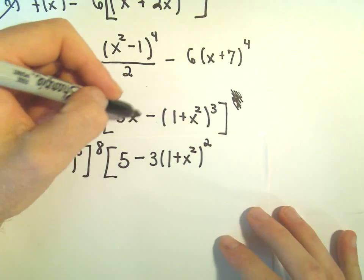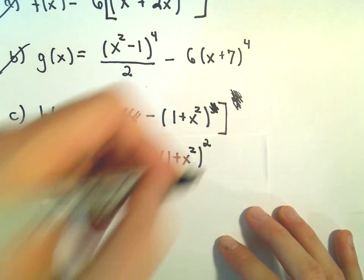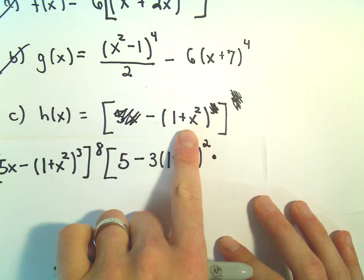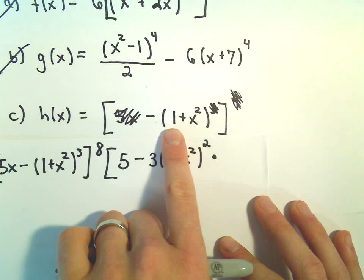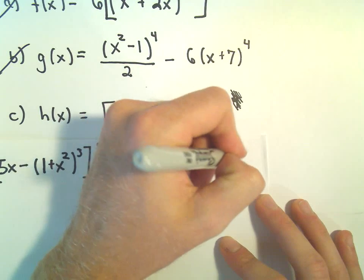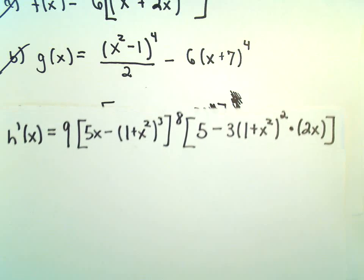We've taken the derivative of the 5x part and the exponent part. Now we have to multiply by the derivative of what's on the inside. So the derivative of 1 is just 0. The derivative of x squared is going to be 2x. And now we have our derivative.